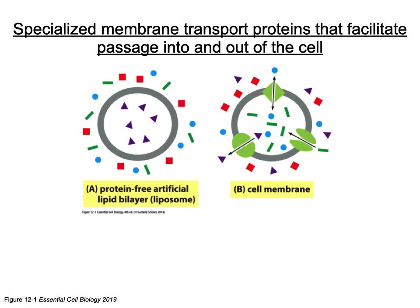Transport proteins can also change the concentration of molecules that would easily diffuse inside. We can have transport proteins that pump out our purple triangles because we want an isotonic solution — equal concentration inside and outside — or to create a concentration gradient. Transport proteins also allow blue circles and green rectangles to move in and out. Transport isn't always bidirectional; some transport proteins allow movement in only one direction.